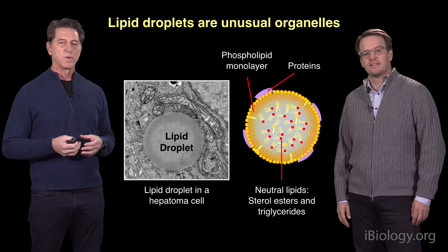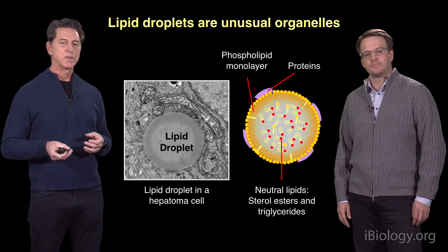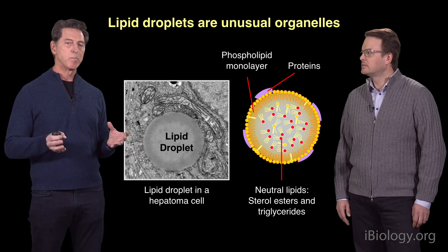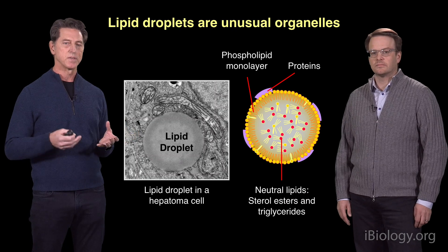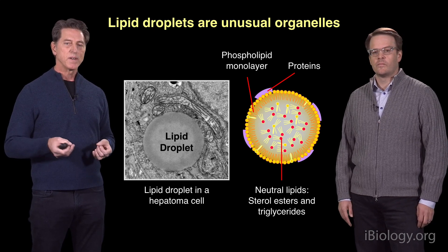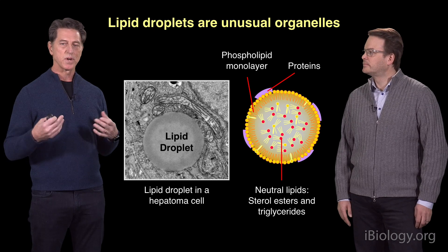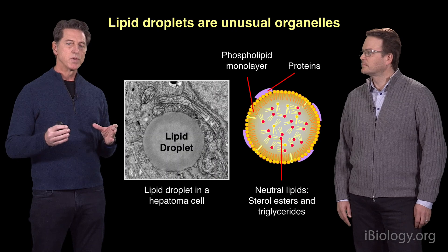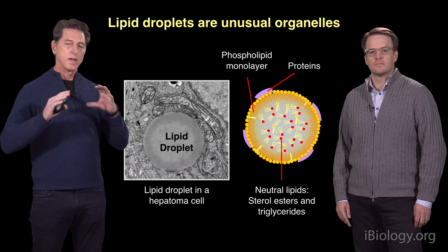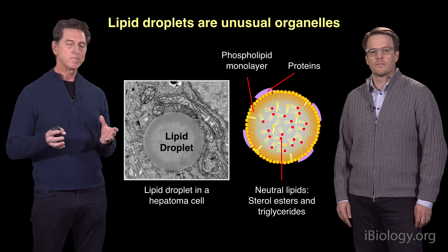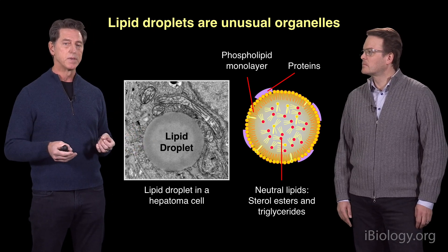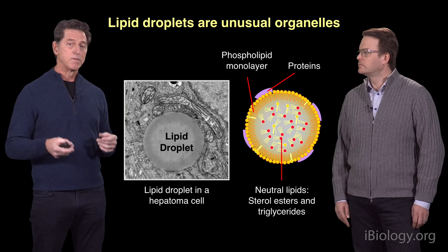Lipid droplets are ubiquitous organelles, but they're also highly unusual organelles. As you can see in the electron micrograph on the left from a hepatoma cell, lipid droplets are bounded by a monolayer instead of a bilayer, which is typically what organelles such as the endoplasmic reticulum, mitochondria, or the nucleus have. On the right is a schematic showing their composition: a neutral lipid core of steryl esters or triglycerides or wax esters, bounded by a phospholipid monolayer decorated by specific proteins numbering in the tens to hundreds, typically involved in lipid metabolism.